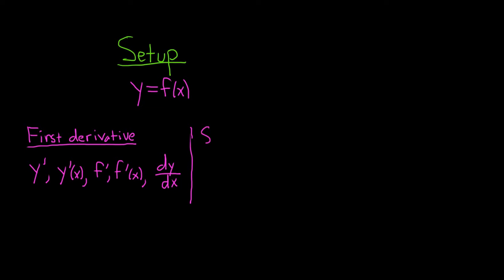And then we have the second derivative. And again, there's various ways to write this. So whenever it's the second derivative, you do y double prime or y double prime of x, or f double prime or f double prime of x. And when you use Leibniz notation, it gets a little bit funky. It's going to be d²y over dx squared.